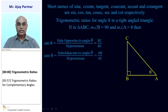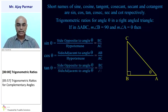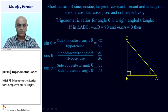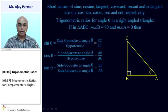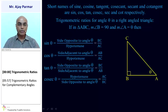Cos theta is equal to the side adjacent to angle theta upon hypotenuse — that is AB upon AC. Tan theta is the side opposite to angle theta upon the side adjacent to angle theta — that is BC upon AB. Cosec theta is the inverse of sine theta, that is hypotenuse upon side opposite to angle theta — that is AC upon BC.